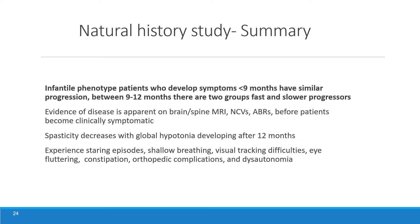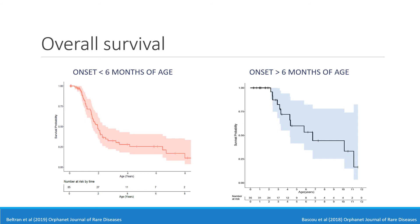We also realized that patients with onset between 9 and 12 months have a very fast progressing group and a slower progressing group that can be differentiated by a scoring system described in the paper. There is evidence of disease in both neuroradiologic and neurophysiological tests before patients become clinically symptomatic. Spasticity decreases and becomes more of a global hypotonia after 12 months due to peripheral nerve involvement. All experience staring episodes, shallow breathing, visual tracking difficulties, eye fluttering, constipation, orthopedic issues, and dysautonomia. Survival curves show about 50% of early onset patients dying at around two years, while the more than 6-month onset group has 50% dying at around six years of age.